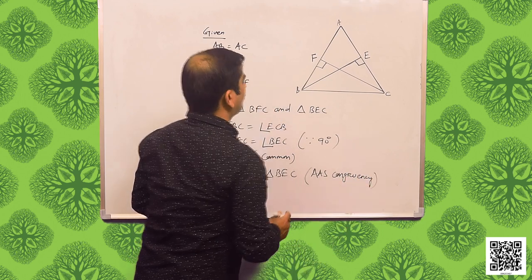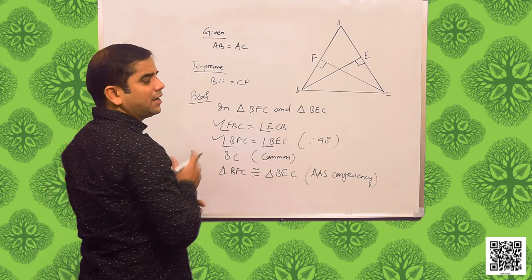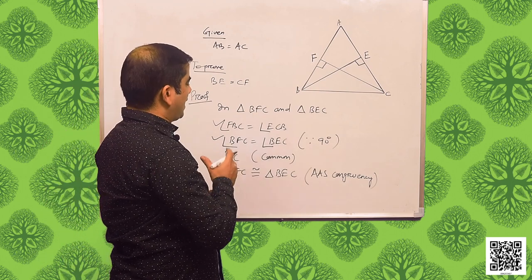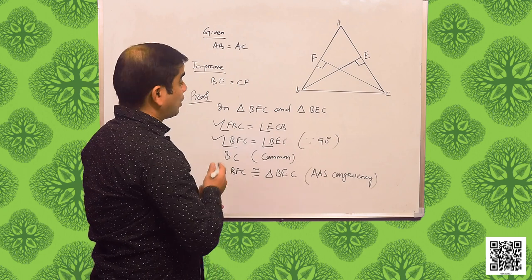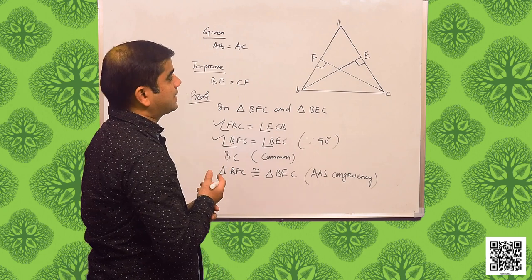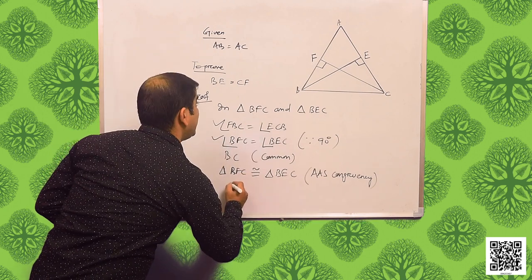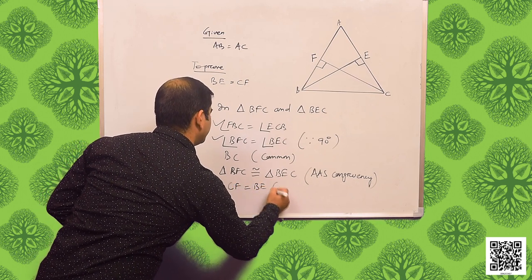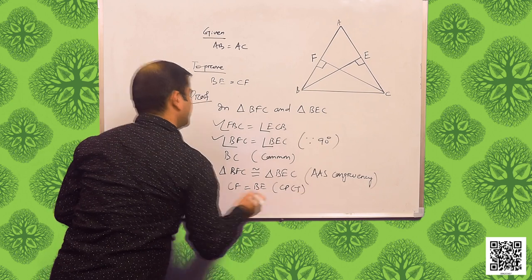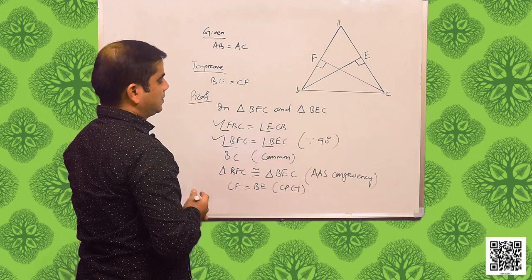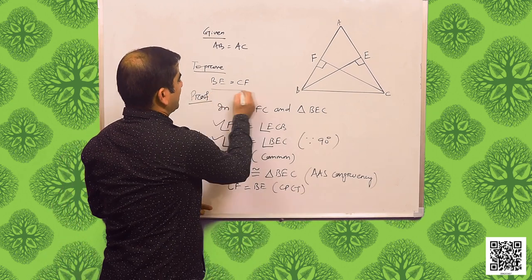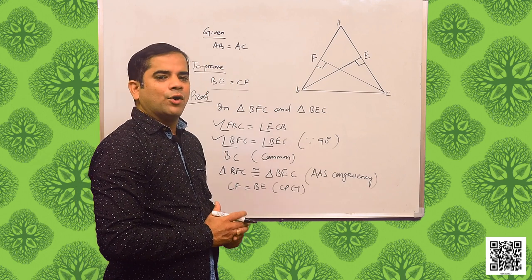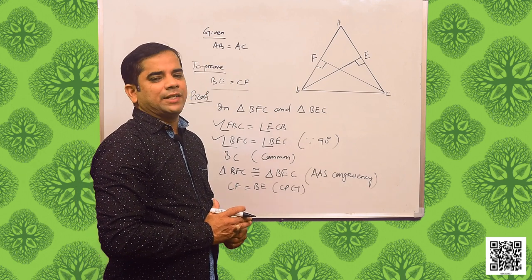Since the two triangles are congruent, CF is equal to BE by CPCT. We have proved that BE is equal to CF. Hope you understood. Let us go for the next question.